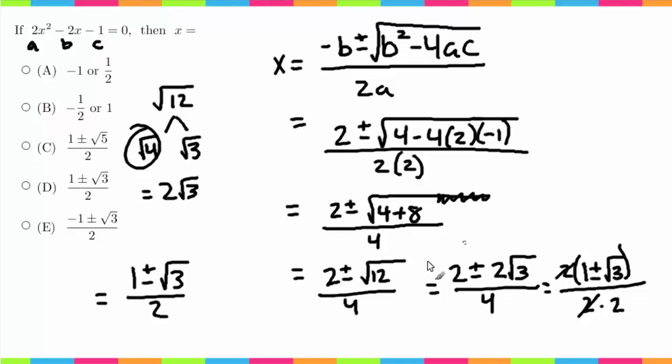So one thing to note, this is one of the major things my students get confused with when using the quadratic equation. If I had a different instance, let's say this instead was 1 plus or minus 2√3 over 4, you cannot cancel these at all. The only time you can cancel is if you have a common factor in every single term.